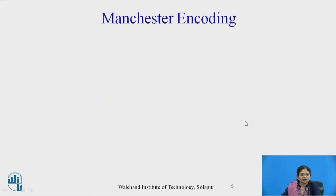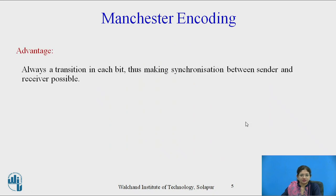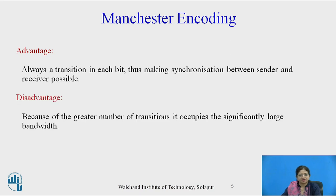Manchester encoding has an advantage: there is always a transition in each bit, making synchronization between sender and receiver possible. However, it has a disadvantage — because of the greater number of transitions it occupies a significantly large bandwidth.